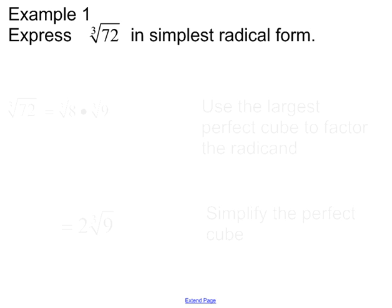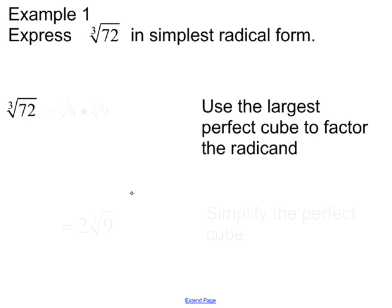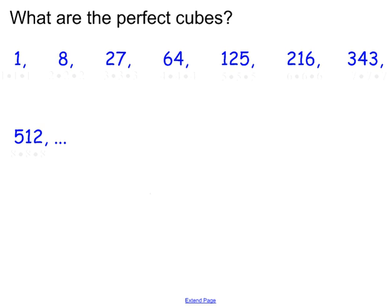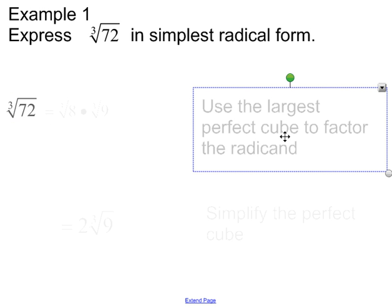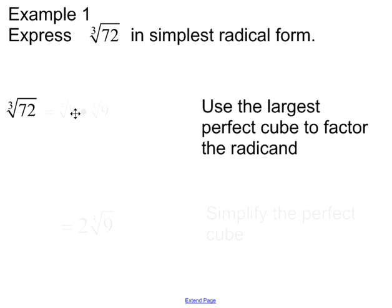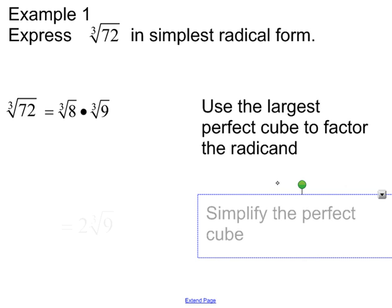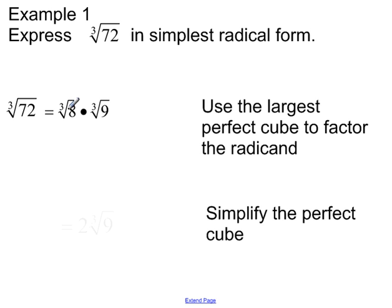Express the cubic root in simplest radical form. The steps are very similar to simplifying square roots, except that now we are in cubic roots. For example, the cubic root of 72 — we want to use the largest perfect cube to factor the radicand. The largest perfect cube that goes into 72 is 8. So we write it as cubic root of 8 times cubic root of 9, which gives us cubic root of 72. The cubic root of 8 is 2, so we get 2 times the cubic root of 9.